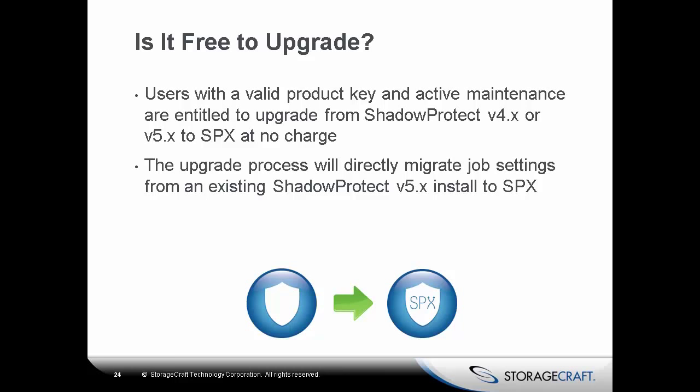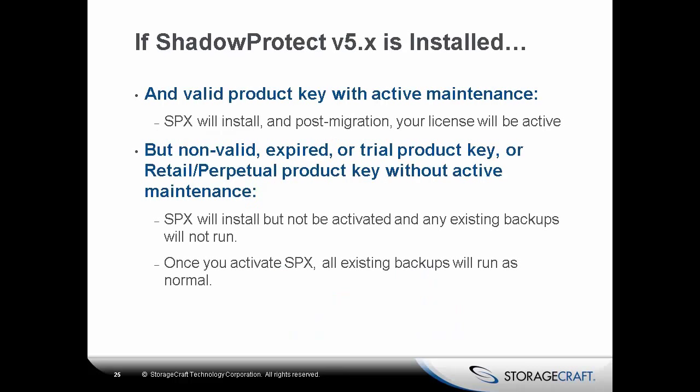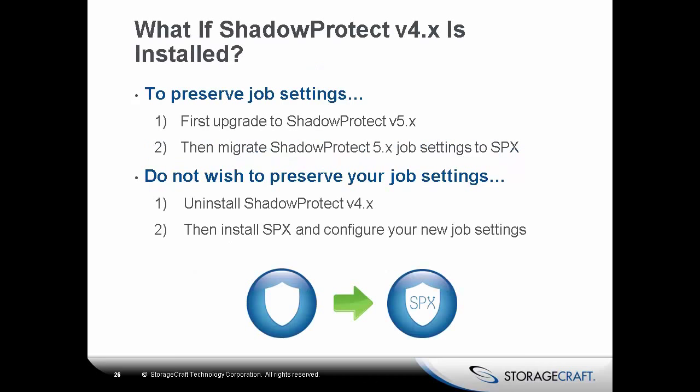The upgrade process will directly migrate job settings from an existing Shadow Protect 5 install to SBX. If you have Shadow Protect 5 installed with an active product key and maintenance, SBX will install and post-migration your license will be active. If you have a non-valid or expired trial product key, or a retail or perpetual key without active maintenance, SBX will still install but won't activate and existing backups will not run until you activate SBX. Once you activate SBX, all existing backups will run as normal.